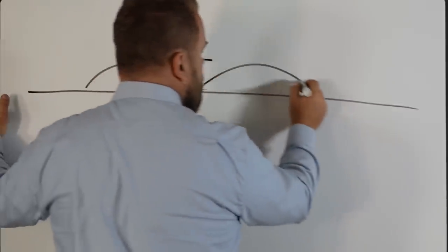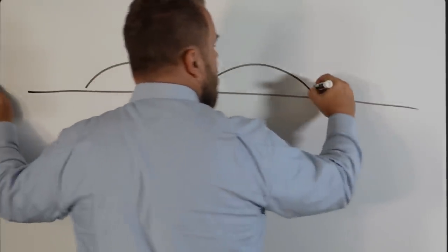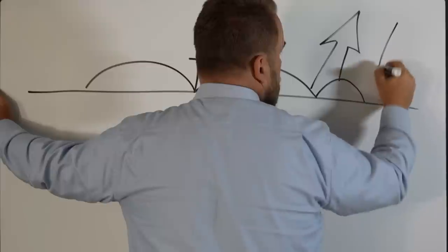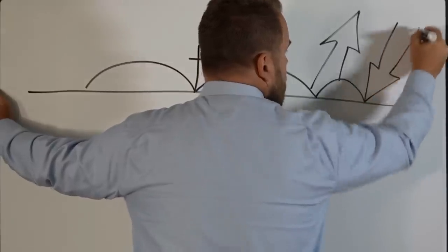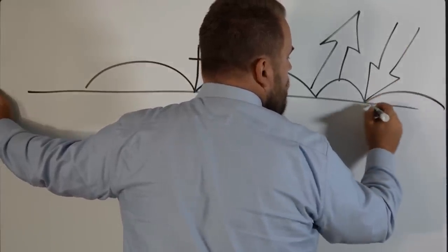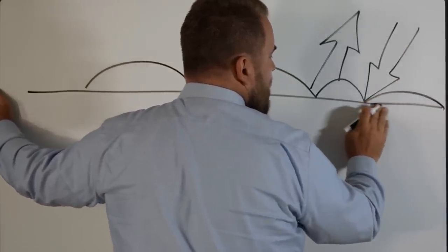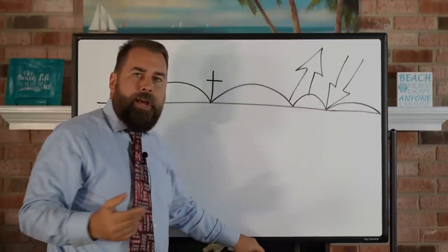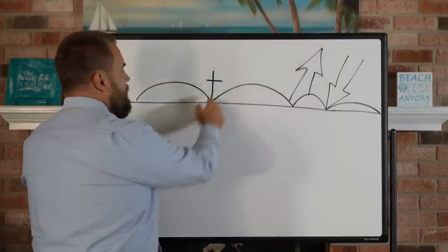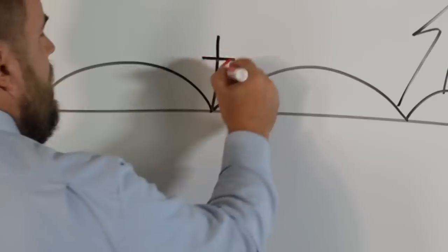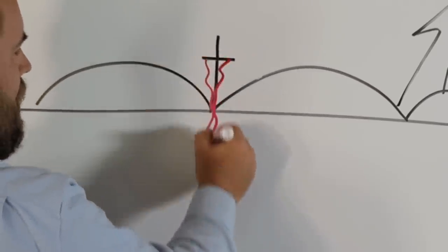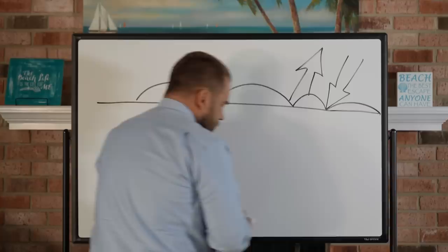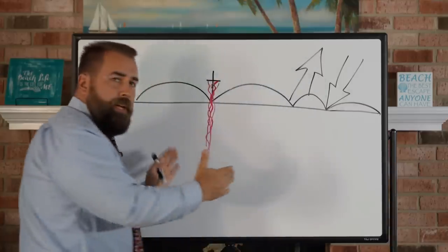As you go through the Bible, you see there are different time periods in different places where God is dealing with people in different ways. And as you study the Bible, you can make those divisions, and it makes the Bible come alive. The most basic division in the Bible is focused on Jesus Christ and what He did almost 2,000 years ago when He shed His blood on the cross of Calvary — and that is what caused the most basic division.